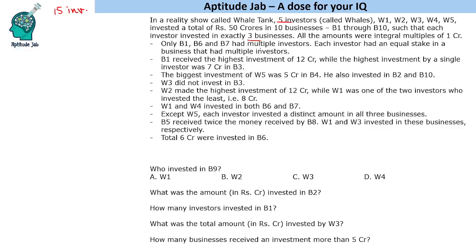Only b1, b6, and b7 had multiple investors; other investments were made by a single investor. It is also given that if multiple investors invested in a business, each investor had an equal stake. So if two people invested in b1, both invested the same amount; if three people invested in b6, all three invested the same amount.